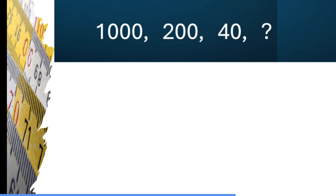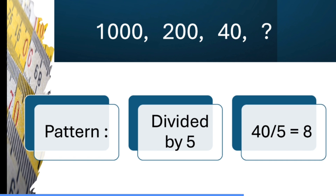Here: 1000, 200, 40, 8. The values are decreasing — let's find the ratio. 1000 divided by 5 equals 200, 200 divided by 5 equals 40. So to get the next number, we divide by 5, which gives us 8.